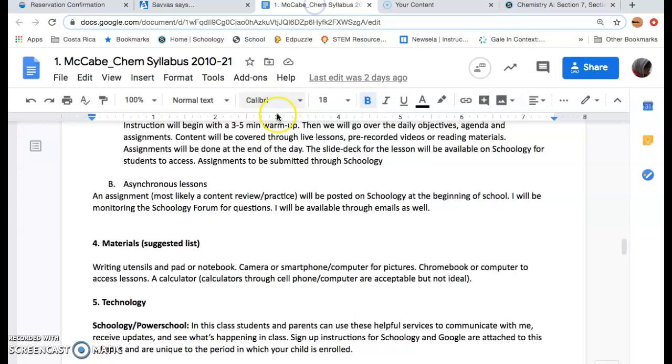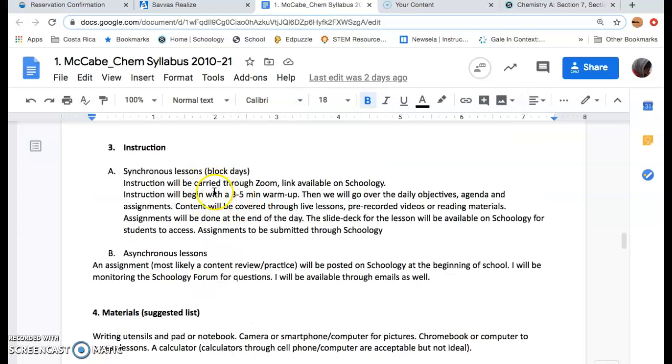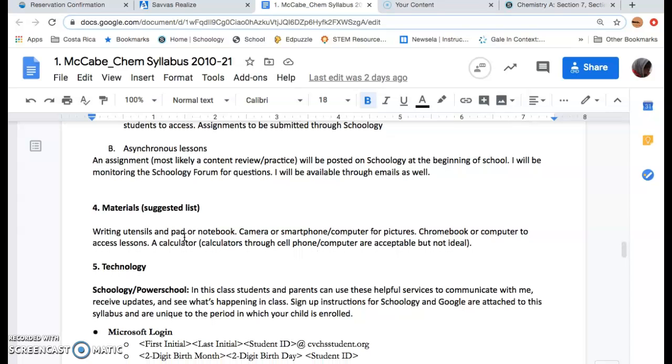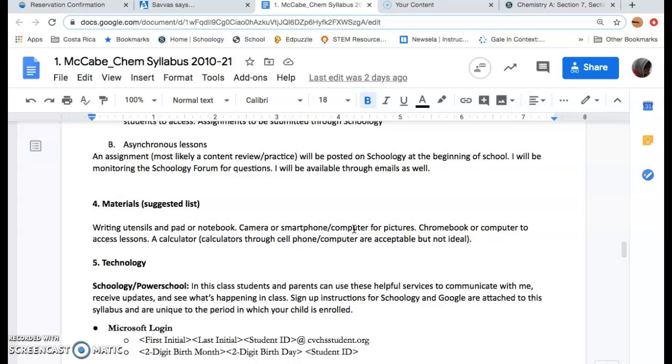Lesson materials. This is all suggested. During the course, it's always good to have a pad or a notebook so you can keep all the information together. I highly recommend it. A camera or smartphone for pictures—there'll be a lot of times I'll ask you to take a picture of something and upload it, so it would be best if you have a Chromebook or a smartphone for pictures. A calculator—this course has a lot of math, so I suggest that you have a calculator. It's okay for you to use your phone and a computer. It's not ideal, but we are not in an ideal situation to begin with, so it's okay.